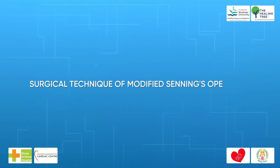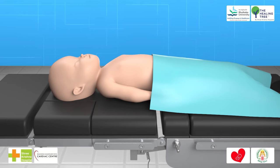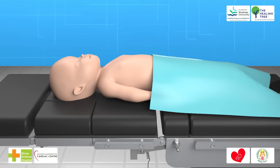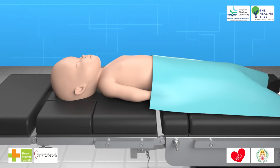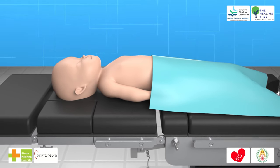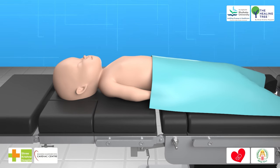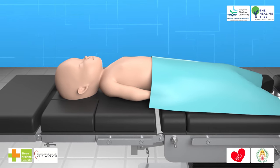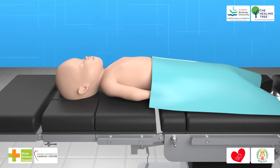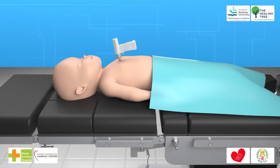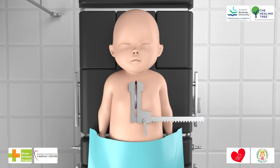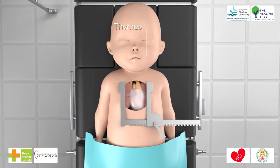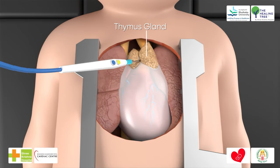Surgical technique of the modified Senning operation: The operation is performed during cardiopulmonary bypass (CPB) with variable degree of hypothermia depending upon the case profile. Step 1: Median sternotomy is performed to expose the heart. Step 2: Thymus dissection is done.